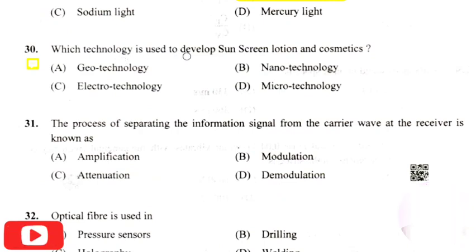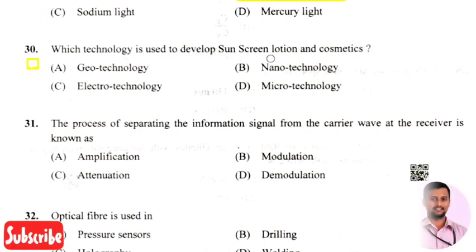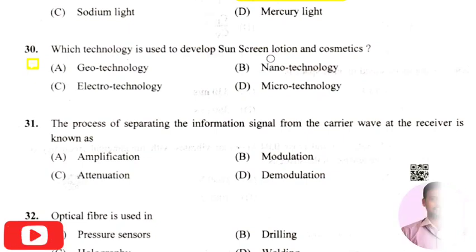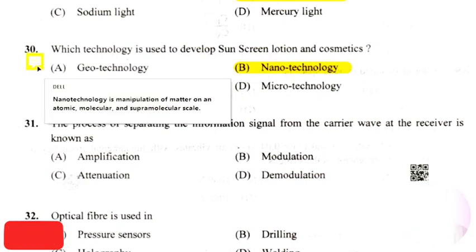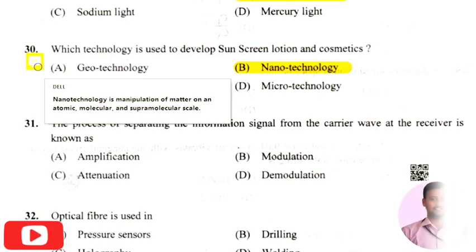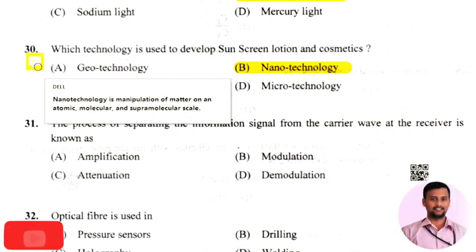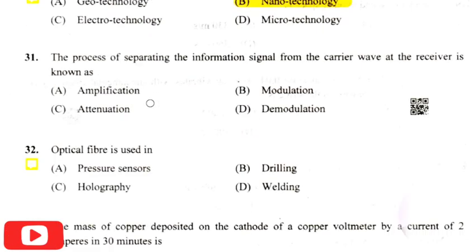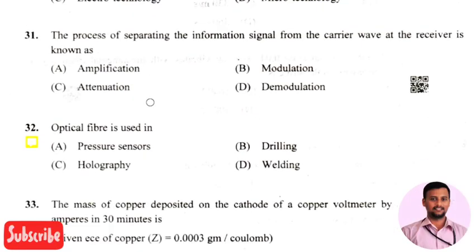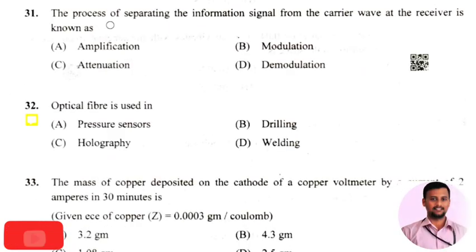The next question is: which technology is used to develop sunscreen lotion and cosmetics — the right answer is option two, that is nanotechnology. Nanotechnology is the manipulation of matter on an atomic, molecular, or supramolecular scale.